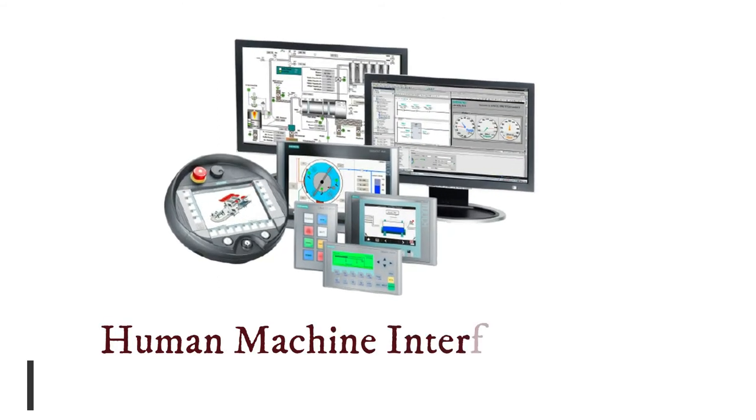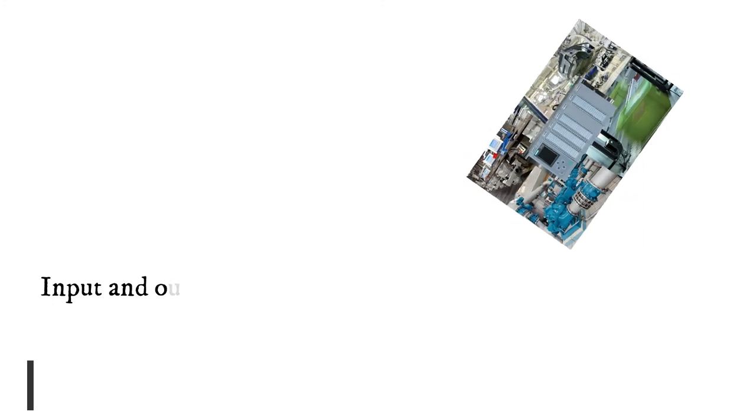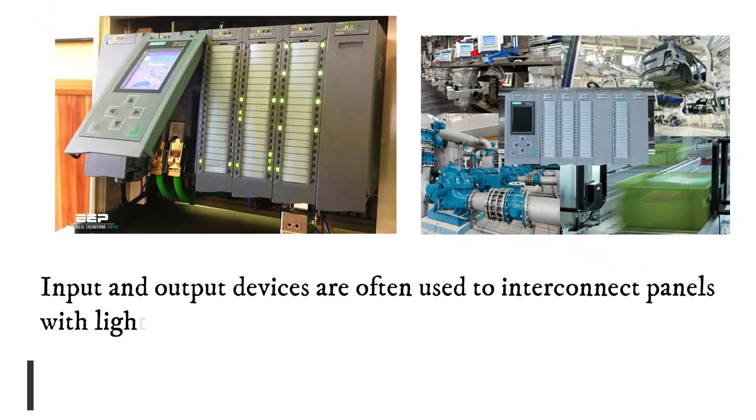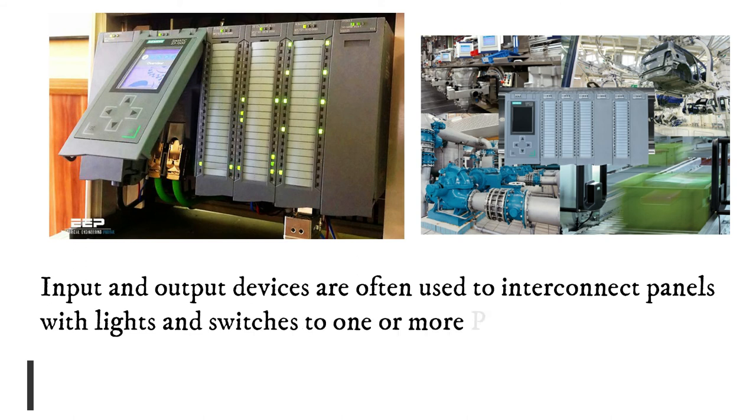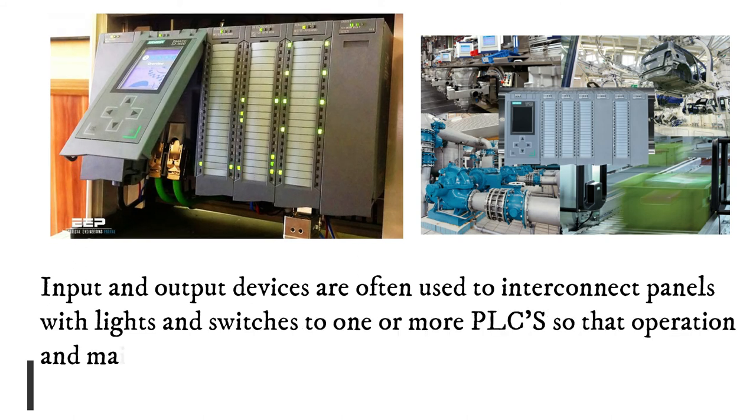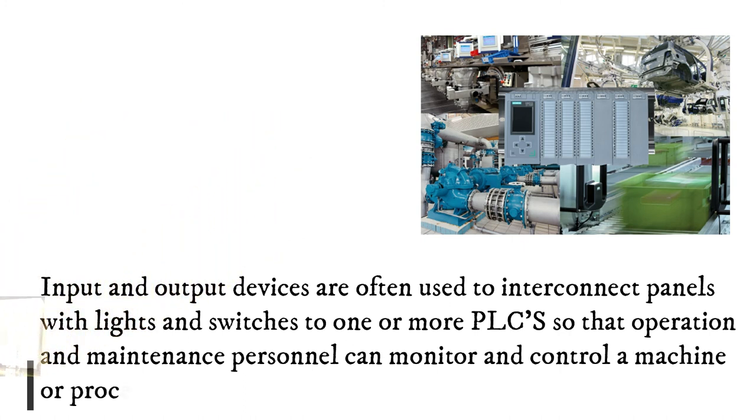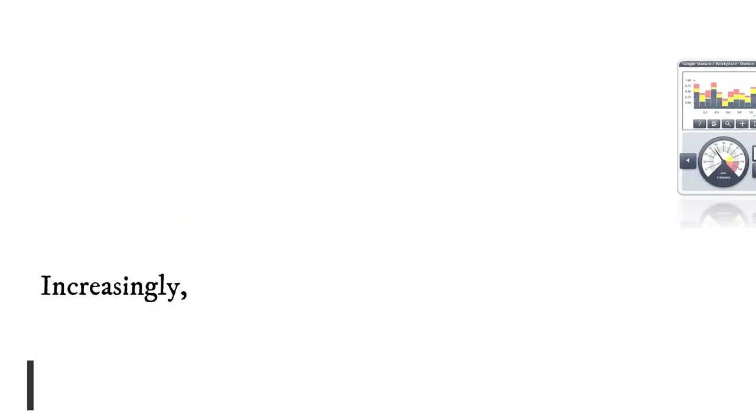Human machine interfaces (HMI) are input and output devices often used with panels with lights and switches connected to one or more PLCs so that operation and maintenance personnel can monitor and control a machine or process. Increasingly, human machine interfaces are also used for similar purposes.